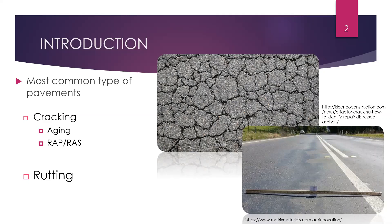Cracking can happen because of different reasons — poor design, poor construction, or poor material quality. It also happens because of aging of the asphalt binder. It also happens when we use recycled asphalt material, when we use aged asphalt binder in the construction of new pavement. When we use RAP in the construction of new pavement, we expect to see cracking earlier in the service life. A lot of research is ongoing to address this issue so we can increase the amount of RAP in new pavements.